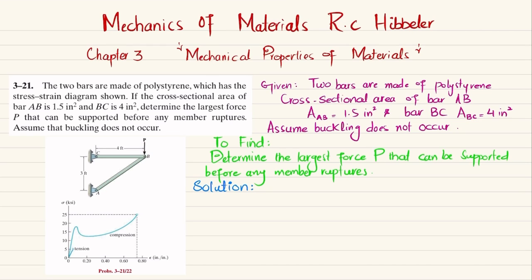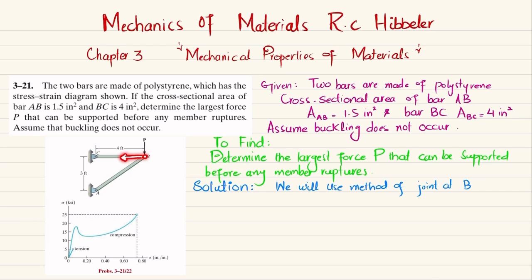To find the forces in CB and AB, we will use the method of joints at B. Due to load P, bar CB will be in tension and bar AB will be in compression. While taking the method of joints at B, bar CB will exert a force on B in one direction, and bar AB will exert a force on point B in another direction.